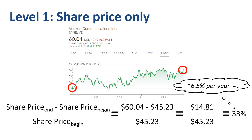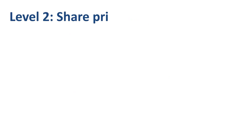But this stock return calculation does not provide a full picture in case the company does pay a dividend, like Verizon. In Level 2 we calculate stock returns based on both the share price increase or decrease, as well as dividends received.